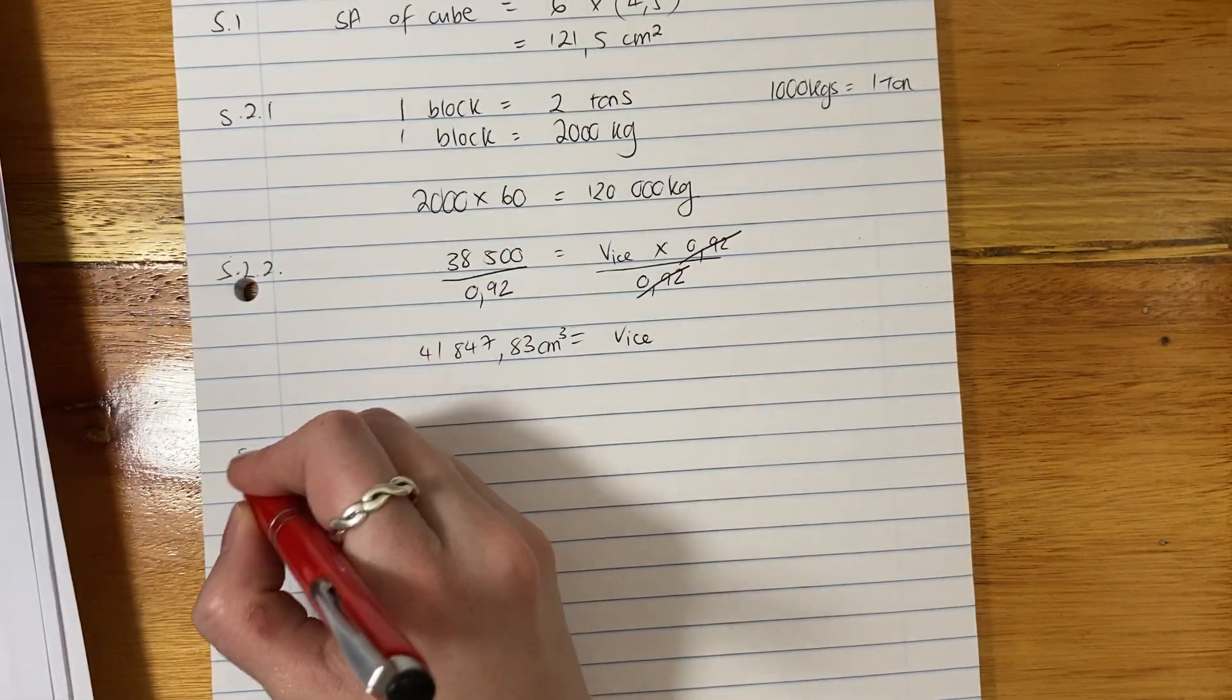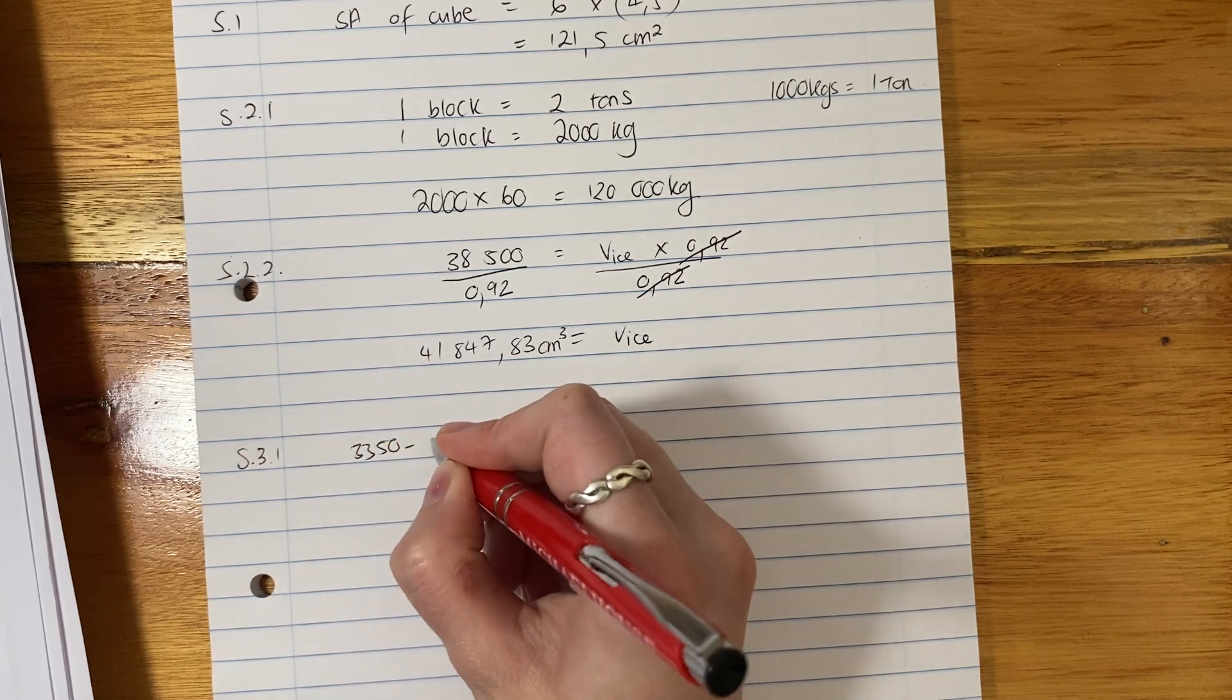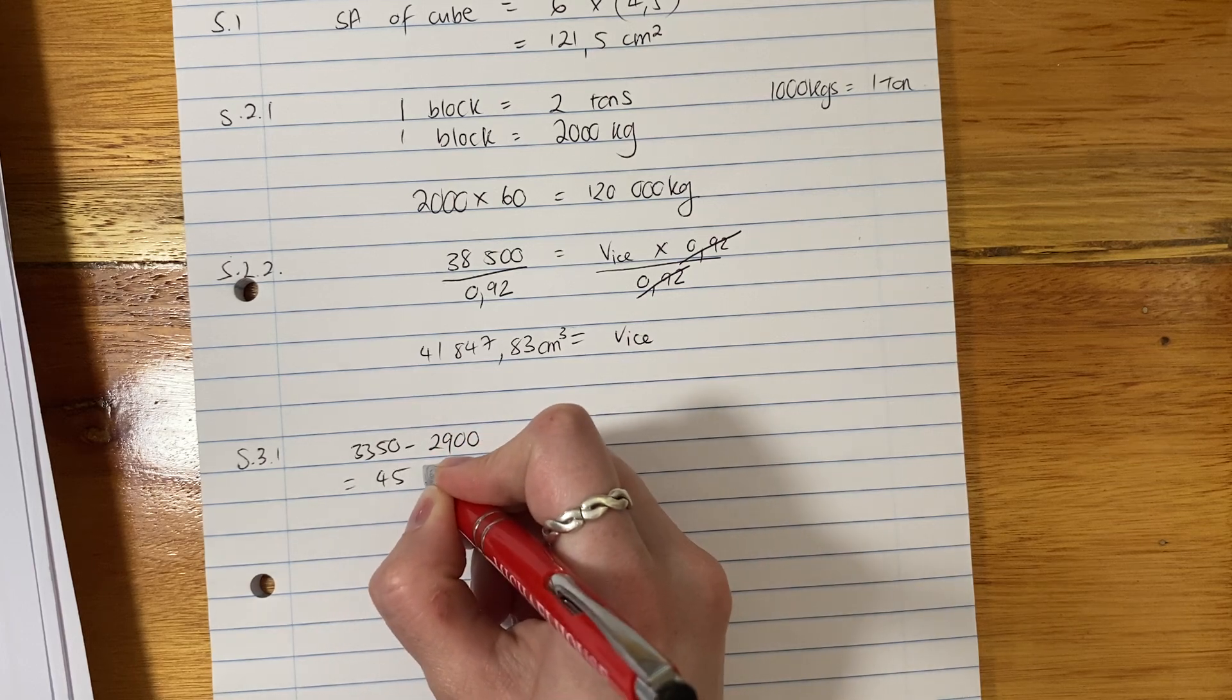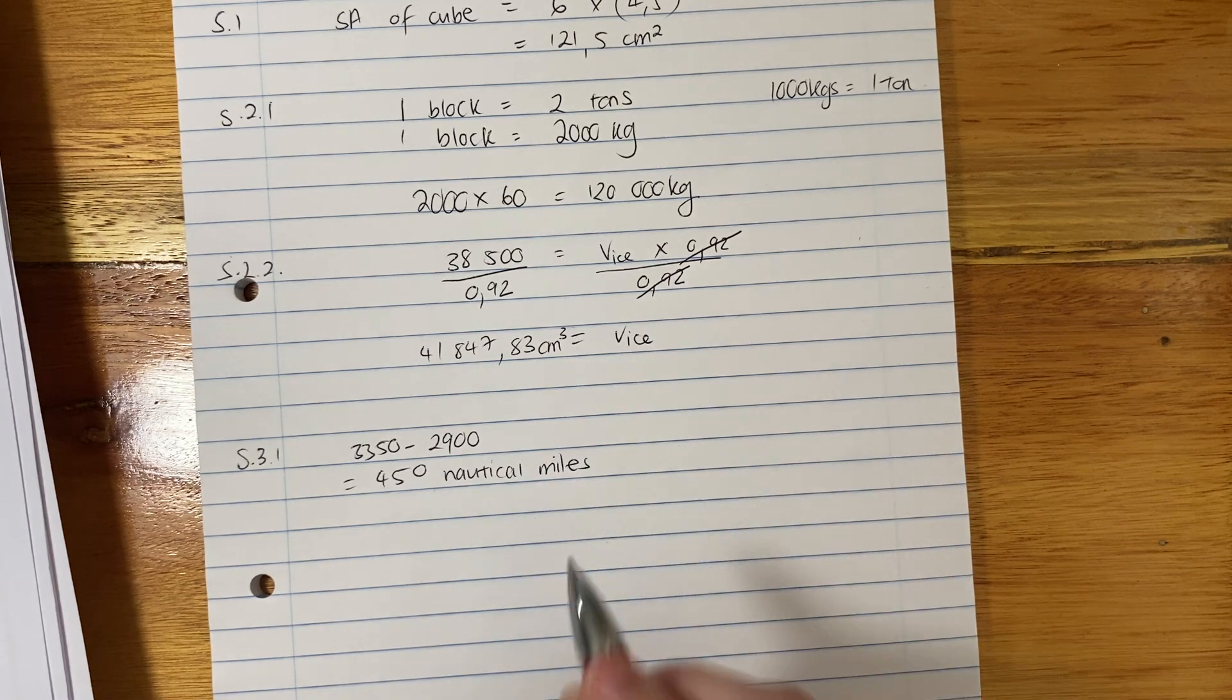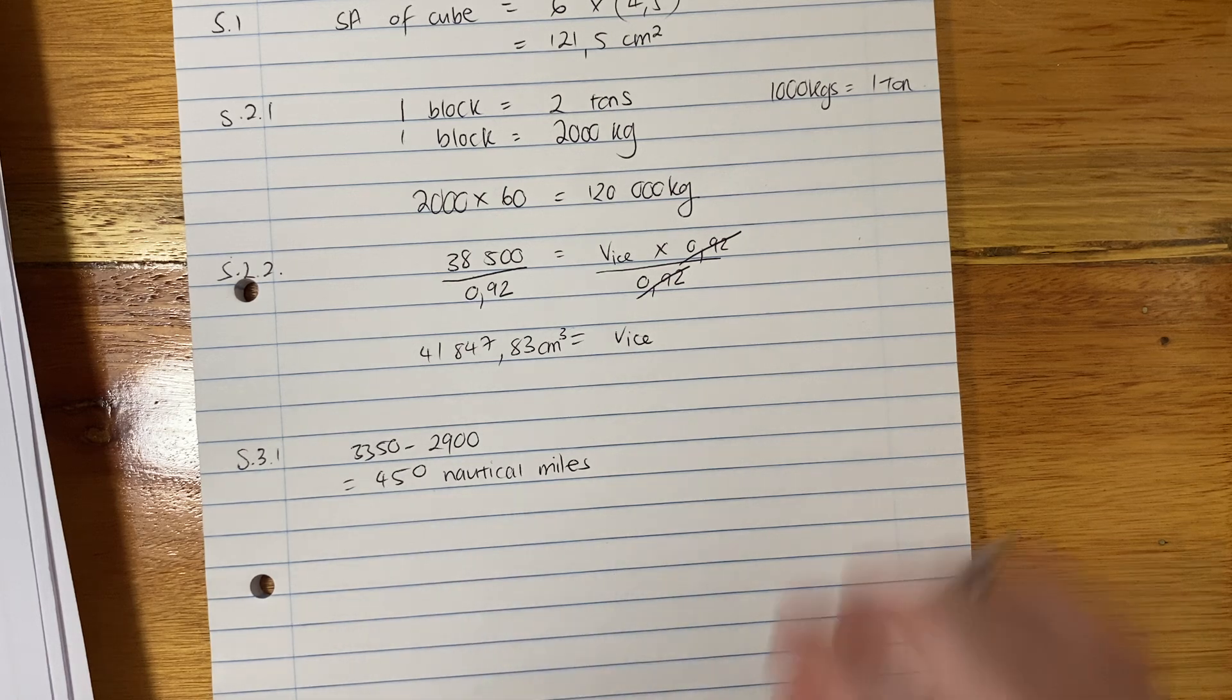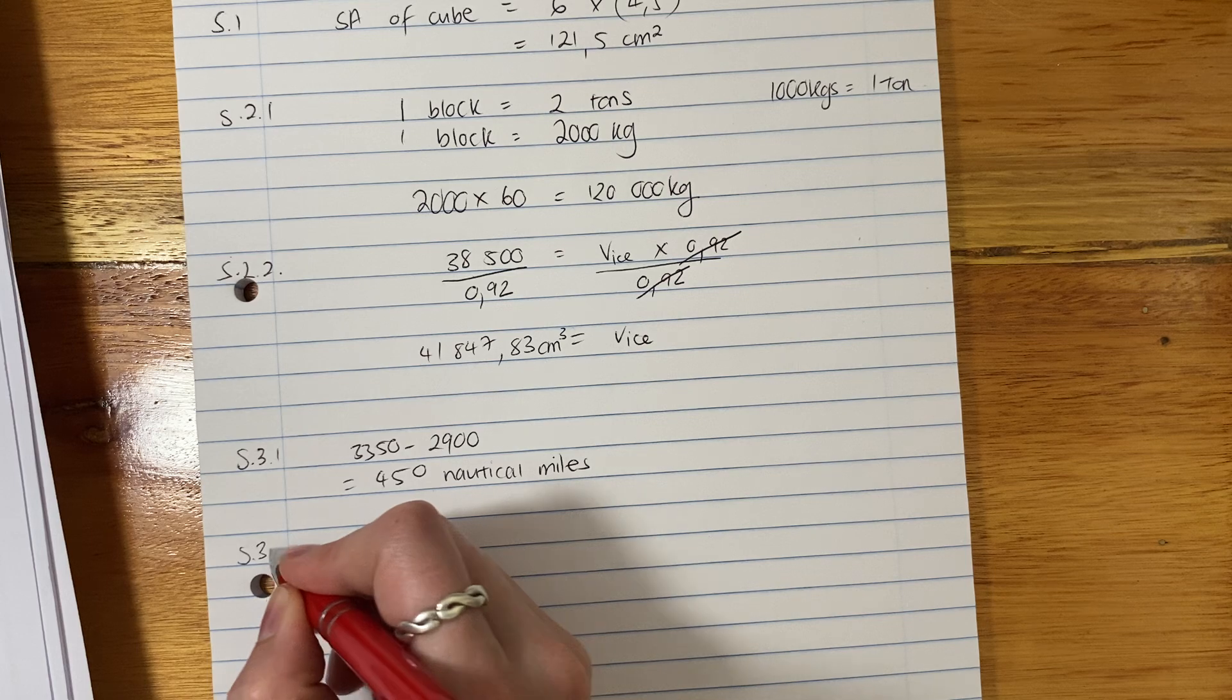5.3.1. So we say 3350 minus 2900. And that is 450 nautical miles. Remember, it actually means something. So you have to put in your units. I do this in my head. If you can't do it in your head, you know where to put it. You'll calculate it, right? So make sure that you are following my logic there.